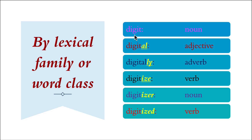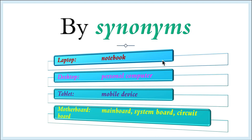From 'digit' (noun) we get: 'digital' (adjective), 'digitally' (adverb), 'digitize' (verb), 'digitizer' (noun), 'digitized' (verb). In this way we can also try to learn new words.